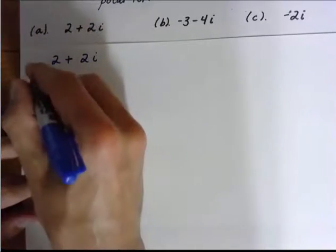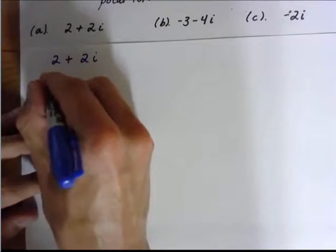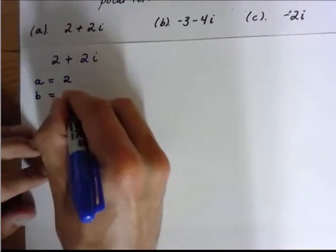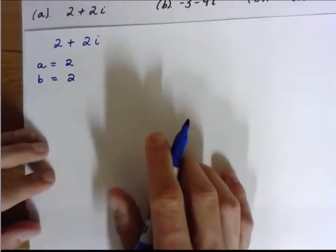A is my real part. So I know that A is going to equal 2. And I know that B is going to equal 2. So that's fairly straightforward.